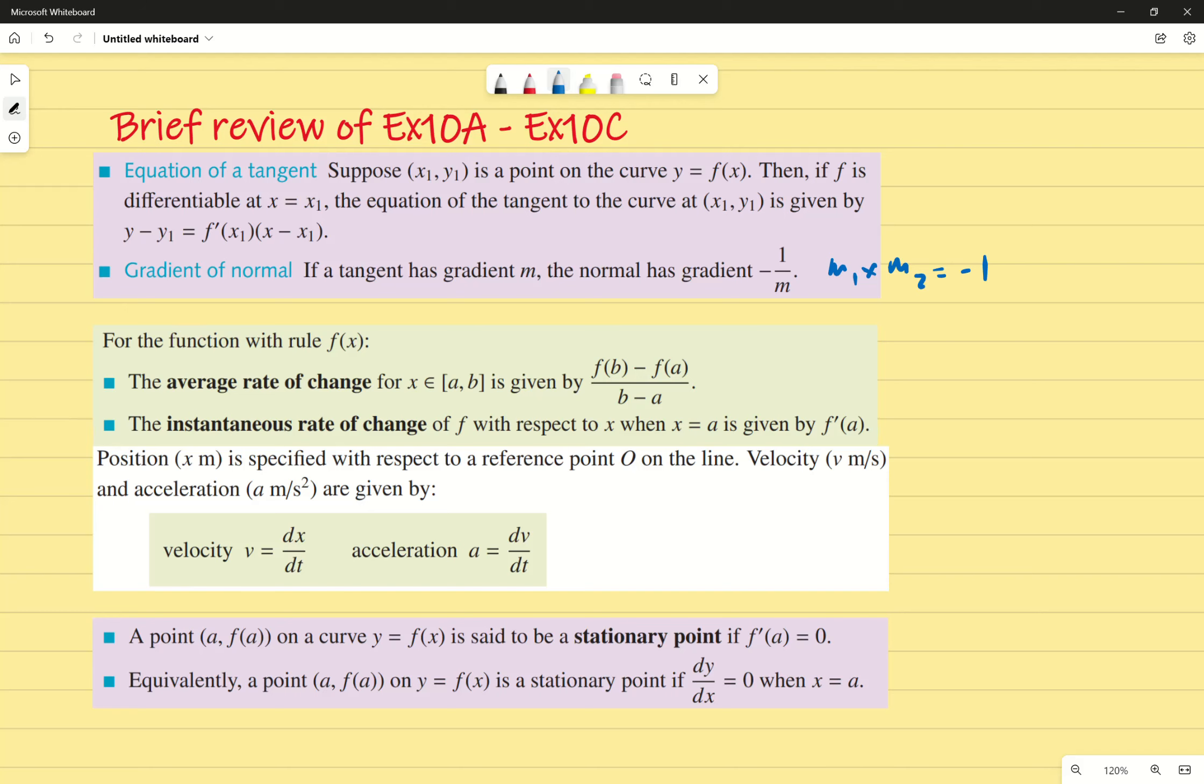Of course, we've got position. Hopefully you remember the kinematics from last year as well. We've got position, which we can differentiate to give us velocity, which we can then differentiate again to give us acceleration. And inversely, we can anti-differentiate to go from acceleration to velocity to position.